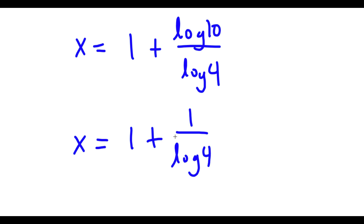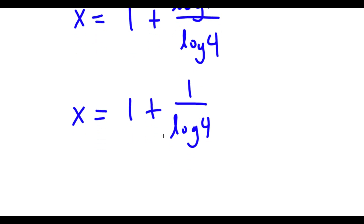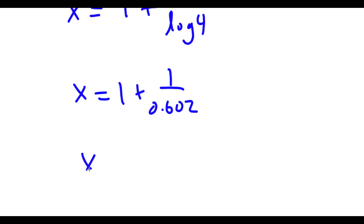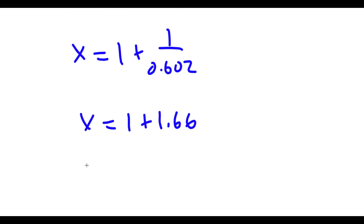And log 4 is equal to 0.602. So now I have x is equal to 1 plus 1 over 0.602, which is equal to 1 plus 1.66, meaning x is equal to 2.66.